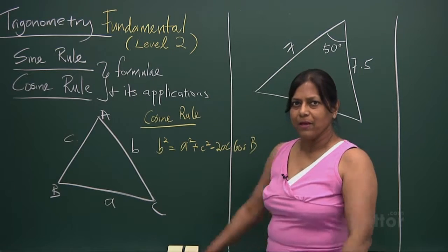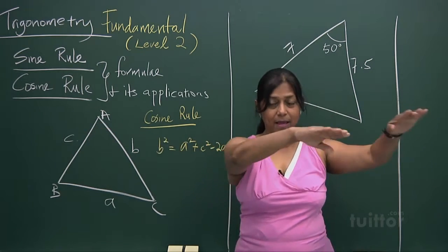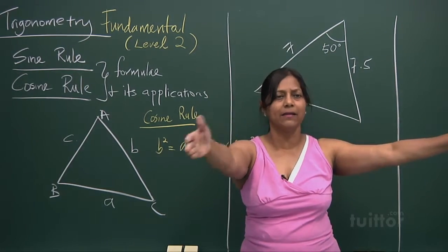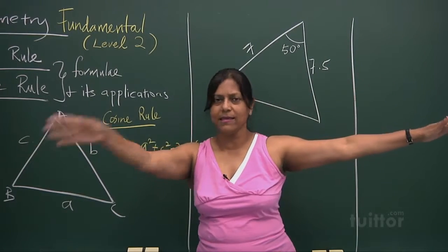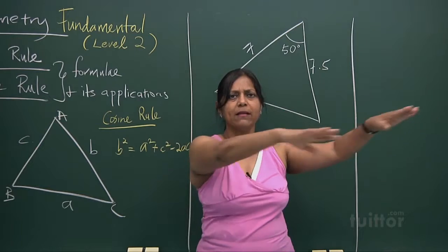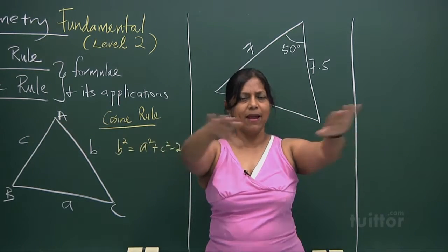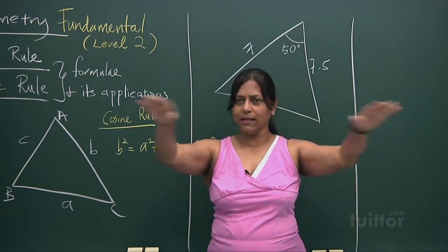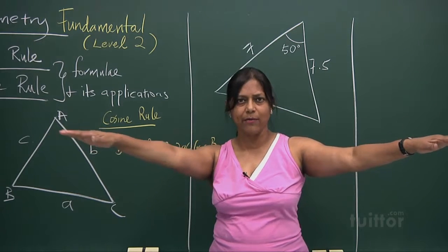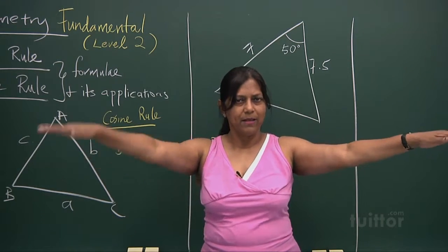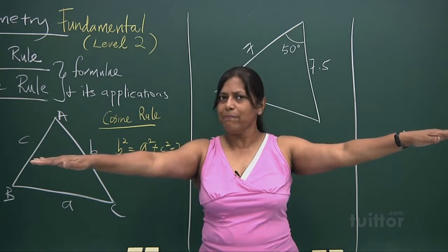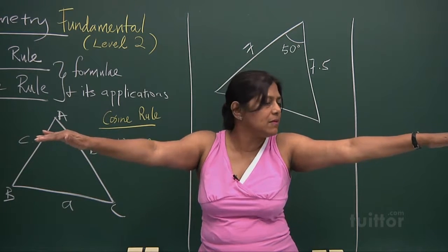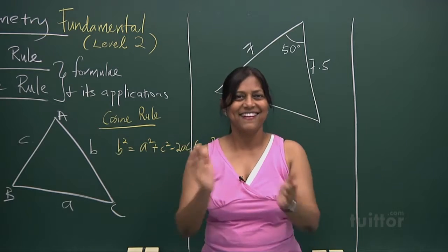Now look at triangle ABC: a is facing side a, b is facing side b, c is facing side c. If you want to find out a particular side, you square it, then add the square of this length plus the square of this other length, minus two times those two lengths times the cosine of the included angle.